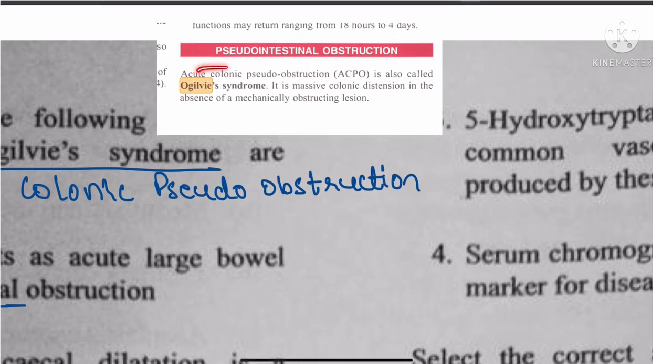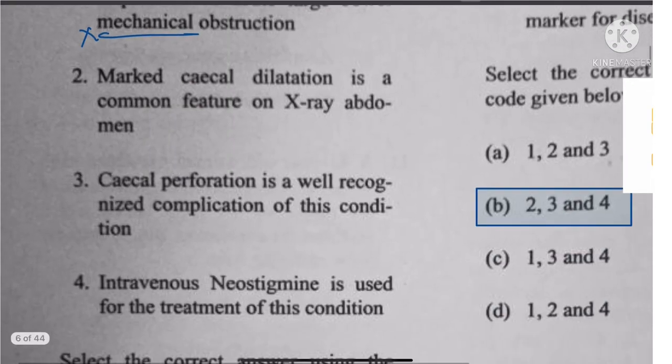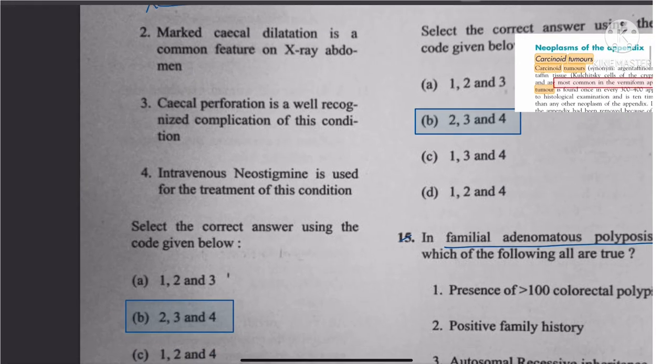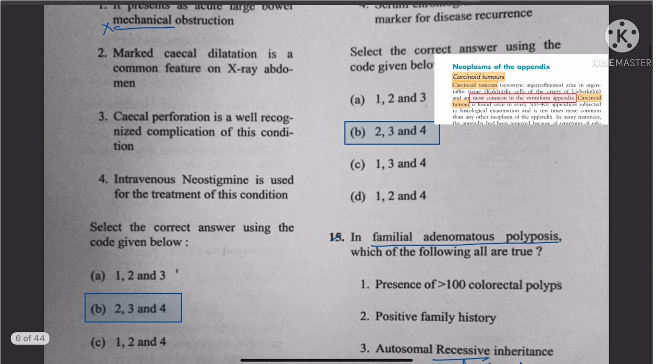Question 13: Ogilvie syndrome is a pseudo intestinal obstruction, not a mechanical obstruction. So the first statement is wrong, and the answer becomes 2, 3, and 4.